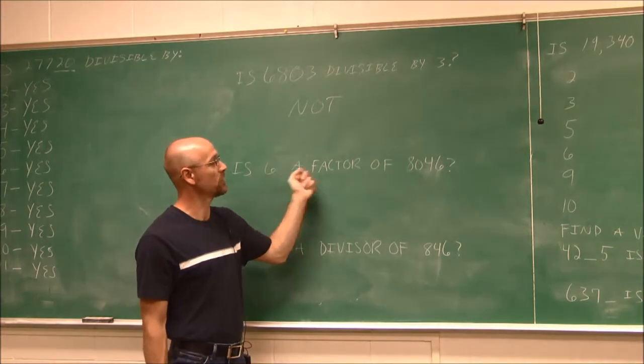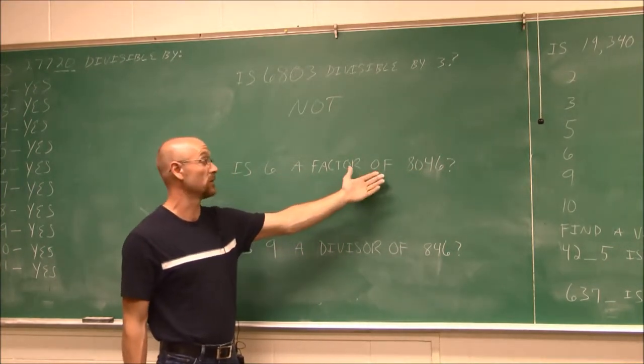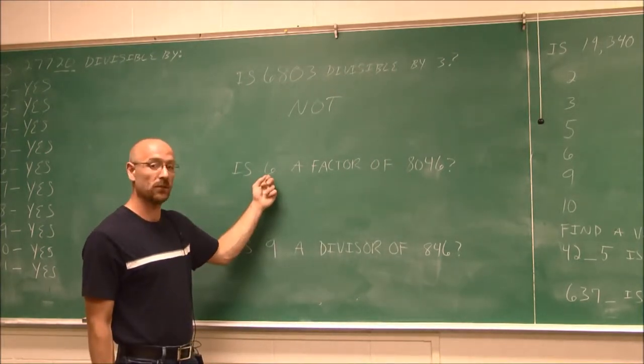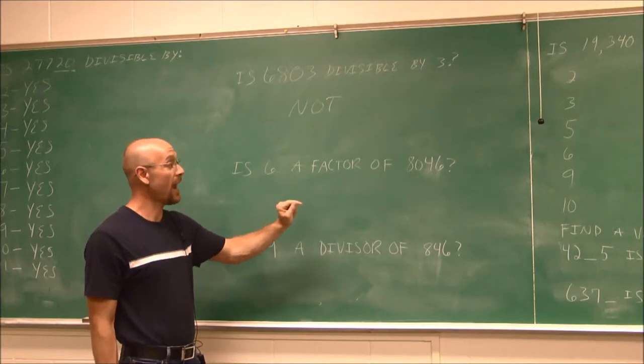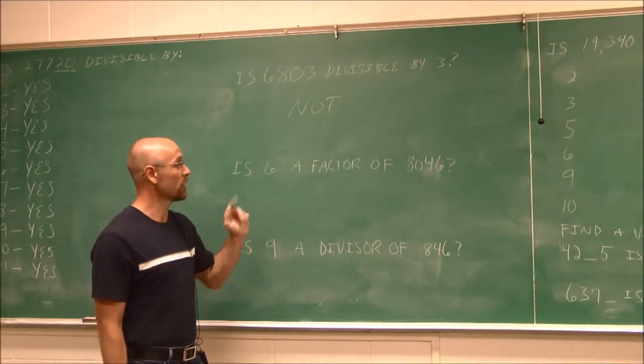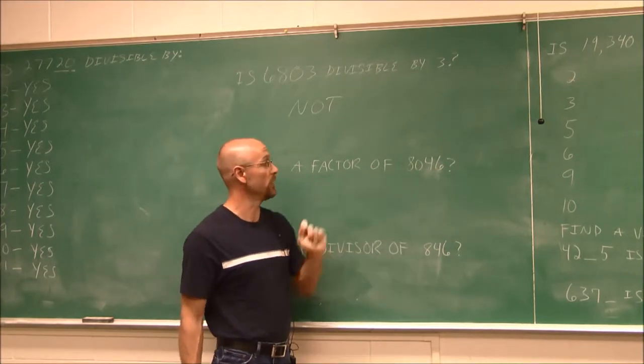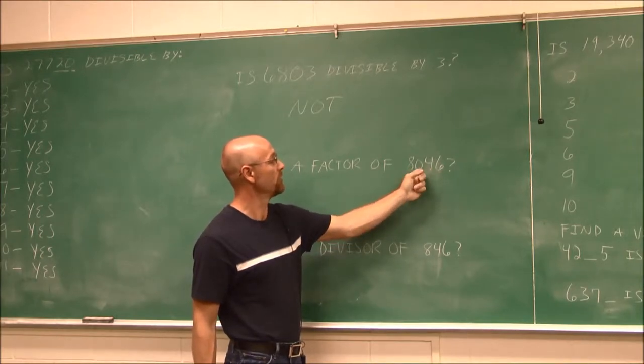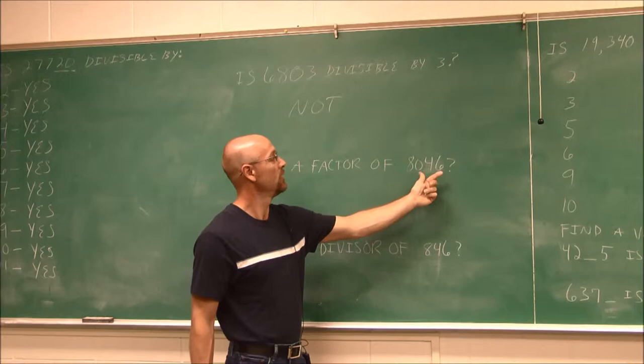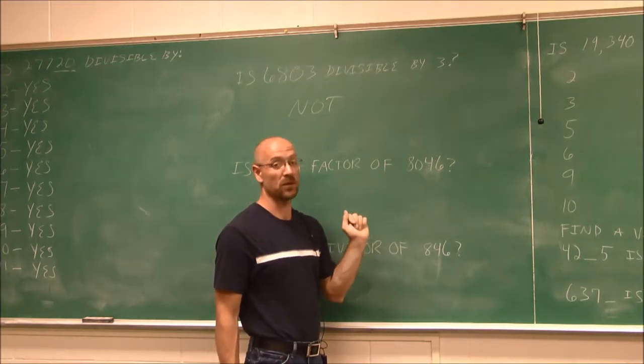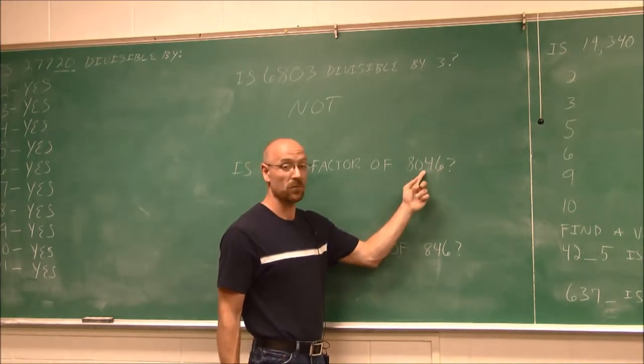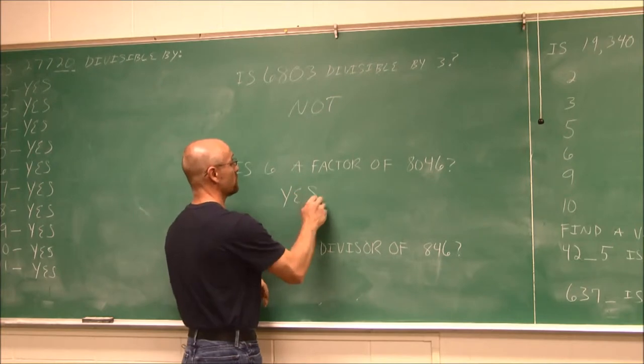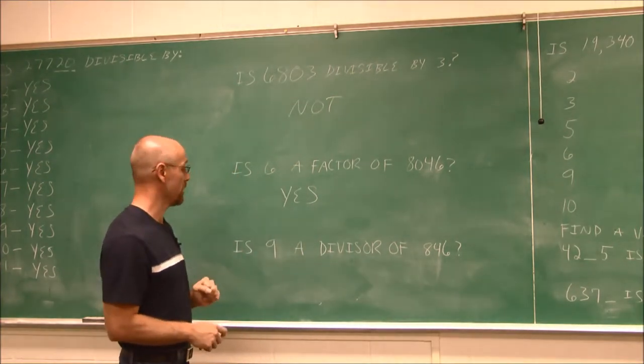So how do I determine if 6 is a factor of 8,046, or is 6 evenly divisible into 8,046? Well, our divisibility rule for 6 is it must be even and divisible by 3. So we're going to use those two rules. I see that it's even, so it is divisible by 2. And is it divisible by 3? 8 and 0 plus 4 is 12, 12 plus 6 is 18. 18 is divisible by 3, so this number is divisible by 3. And we just determined that it's divisible by 2 and 3, which is 6. So the answer is yes, 6 is a factor of 8,046.